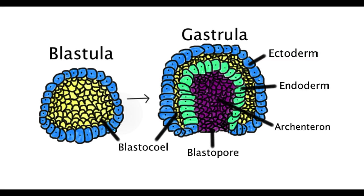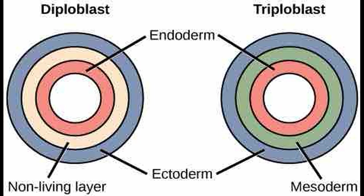All eumetazoans — i.e., all animals except for sponges — undergo gastrulation following the blastula stage, forming the gastrula. During gastrulation, the single-layered blastula is organized into layers. One side of the blastula invaginates and deepens. In animals with two germ layers, called diploblasts, the outside of the gastrula is composed of ectoderm, and the invaginated tissue is composed of endoderm. All other animals are triploblasts, and we will return to this shortly.